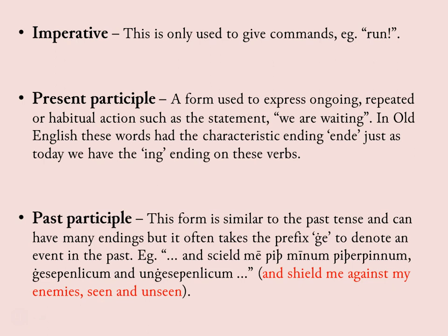We also have the past participle. You'll also see that it has the prefix 'ge-'. For this example sentence, we would have 'and scylde me mid minum freond-winum, gese-wenlicum and un-gese-wenlicum'.